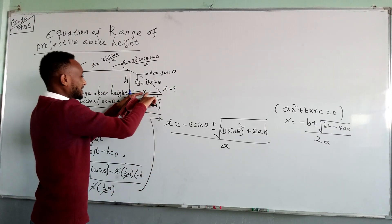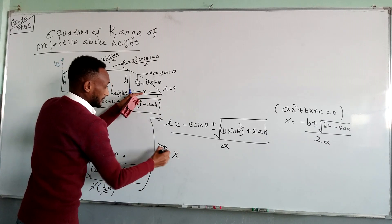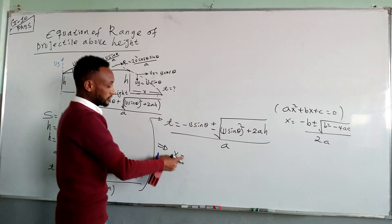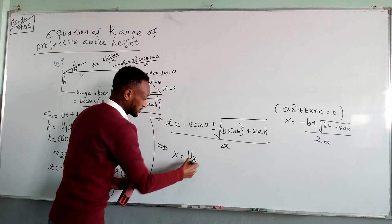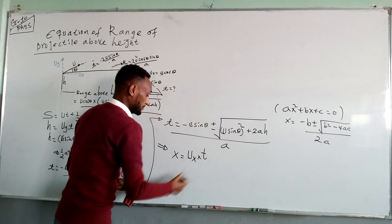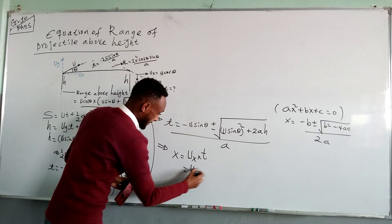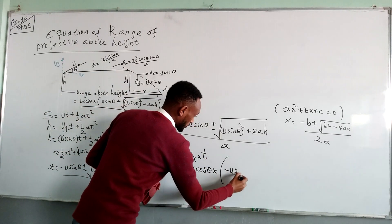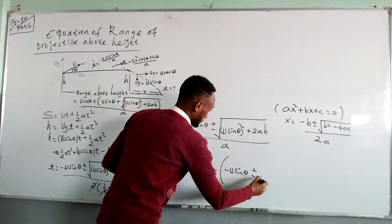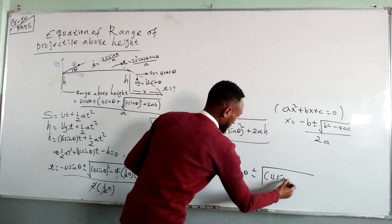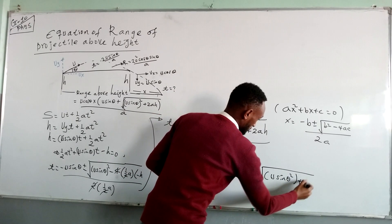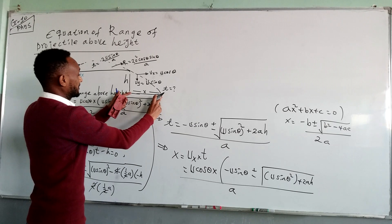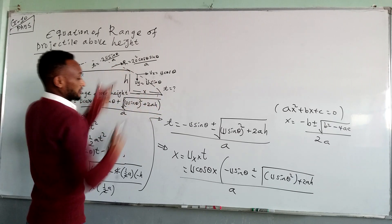Finally, we can find the horizontal distance x. Horizontal displacement x is related to horizontal velocity times time. So x = u cos θ × (−u sin θ ± √(u sin θ)² + 2ah / a) ... that is, horizontal distance x = u cos θ times the time found above, giving x = u cos θ × (u sin θ ± √(u sin θ)² + 2ah) / a. This is the horizontal distance the projectile travels after this point.